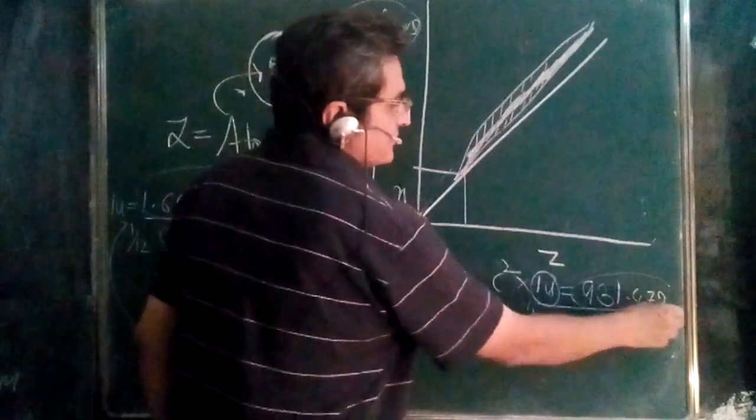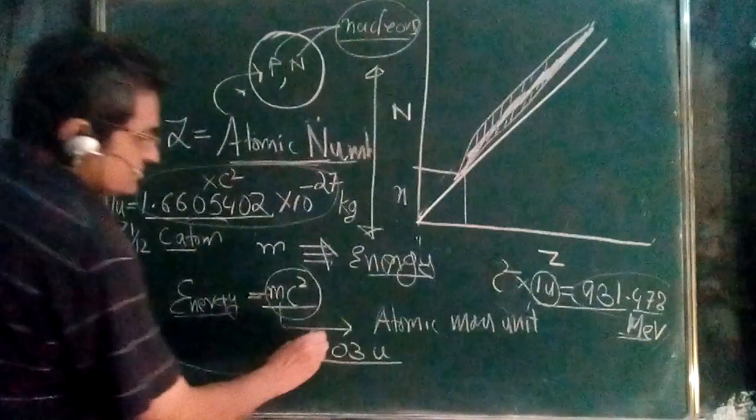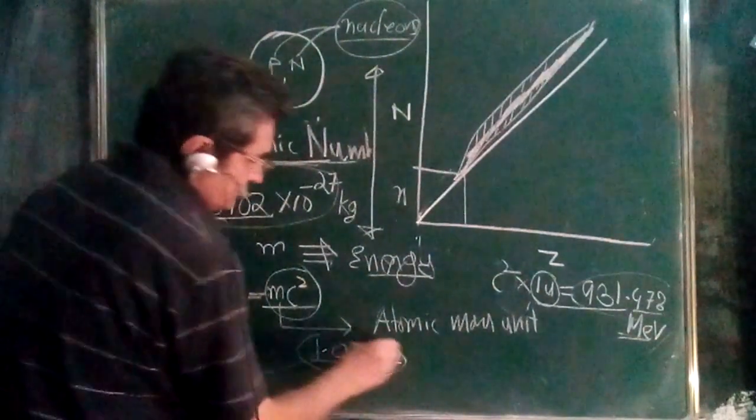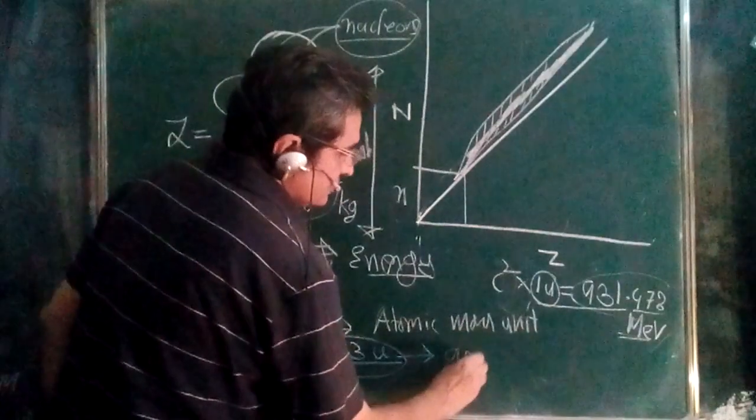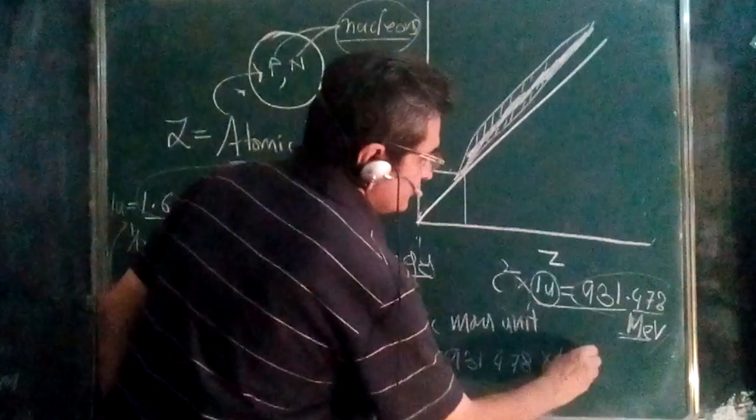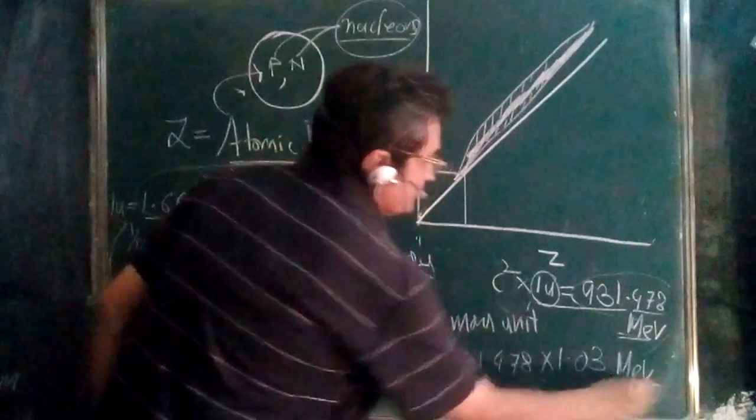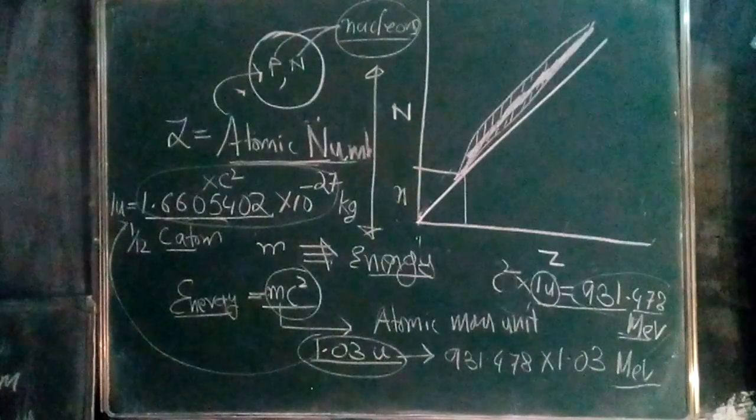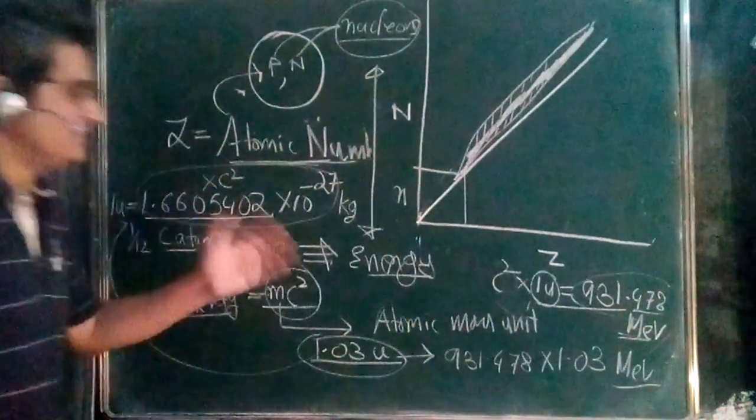To find the energy, just multiply 931.478 by 1.03 to get the answer in MeV. Problems are generally given in terms of atomic mass units, and this conversion helps in solving them. This was just a basic introduction.